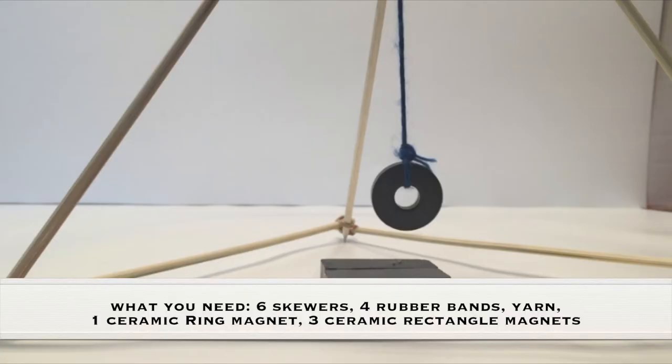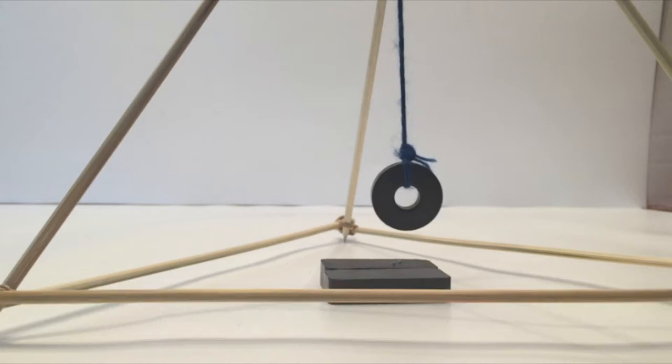Adult supervision is required. What you need for this experiment is six skewers, four rubber bands, yarn, one ceramic ring magnet, and three ceramic rectangle magnets.